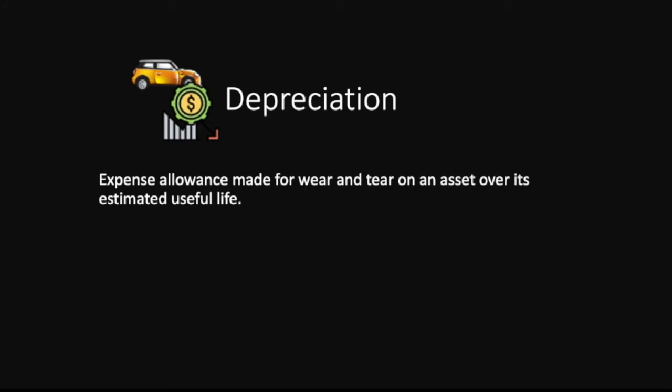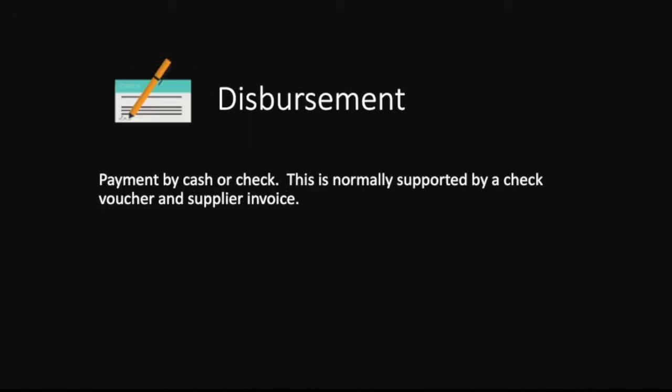Depreciation is an expense allowance made for wear and tear of an asset over its estimated useful life. When you acquire an asset, you don't record it as an expense in a single accounting period. Instead, you record the expense based on its wear and tear and usage depending on its estimated useful life. Disbursement is basically a payment by cash or check, normally supported by a check voucher and the supplier invoice as its source document.